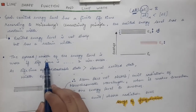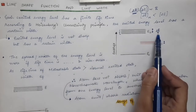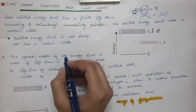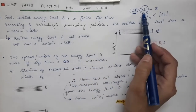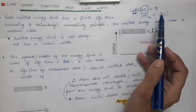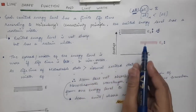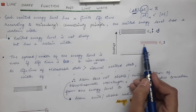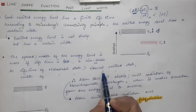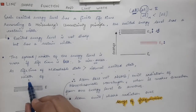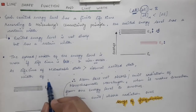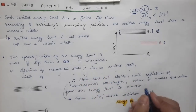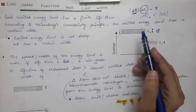The spread or width of the energy level delta E is more if the lifetime is less, and vice versa. The lifetime of the metastable state is greater than that of the normal excited state, therefore the width or energy spread for the metastable state is less as compared to that of the normal excited state.